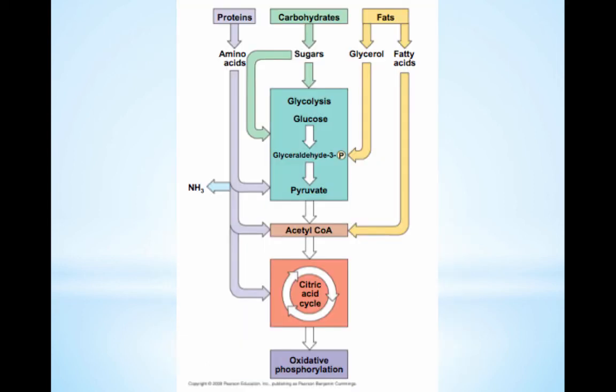Free glucose is rare in our diet; we obtain most of our calories from fats, proteins, sucrose, and starch. A cell can use a wide variety of polysaccharides and sugars for glycolysis. Enzymes in our digestive tract break starches into glucose, feeding them into cellular respiration.